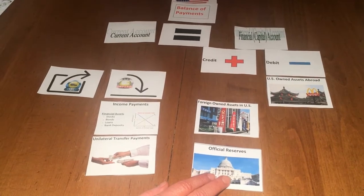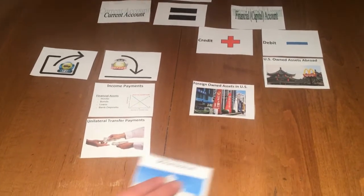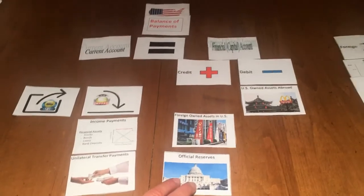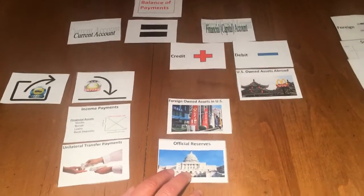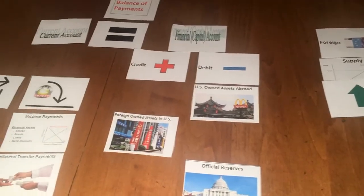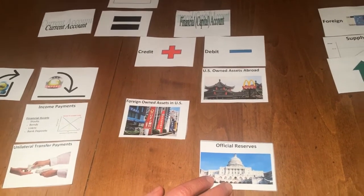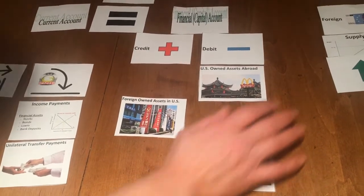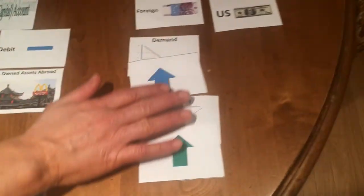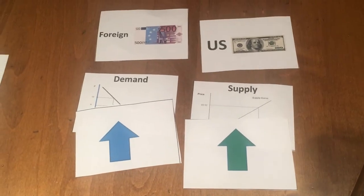If the financial account is larger, you need to bring it down to meet the current account. As a result, the government will invest in foreign currencies of another country — they will buy their reserves and supply US dollars in order to demand the foreign currency to pay for it.